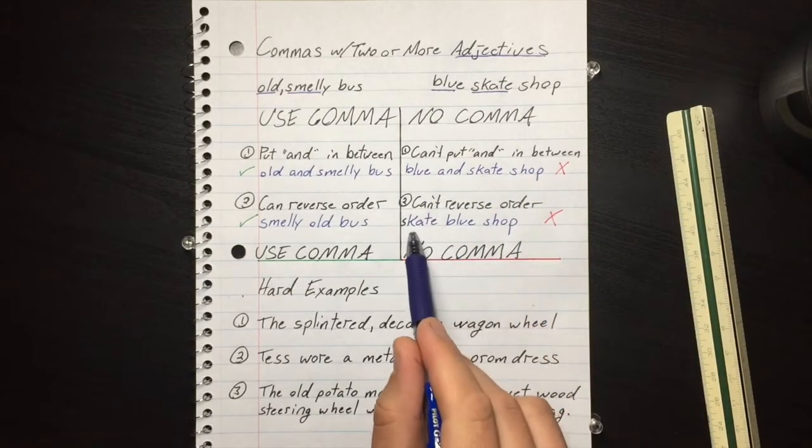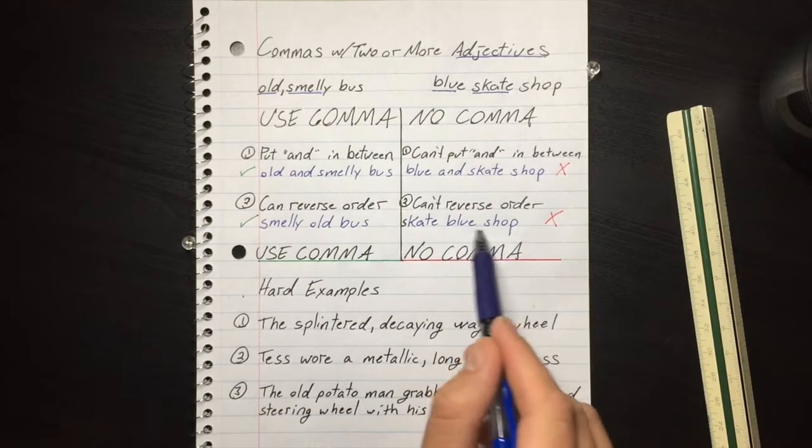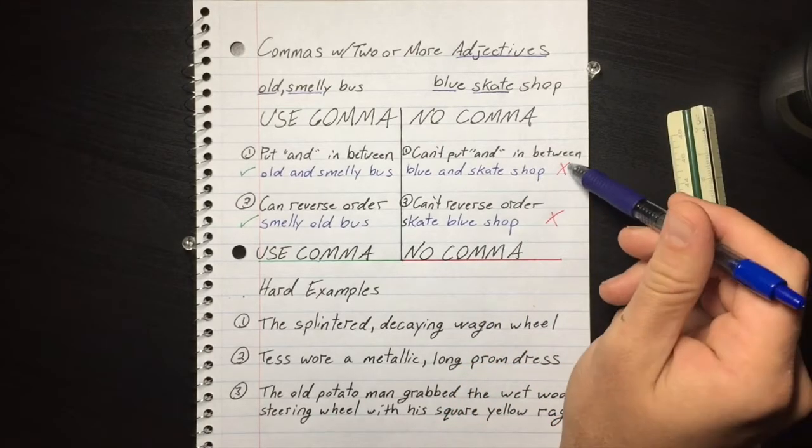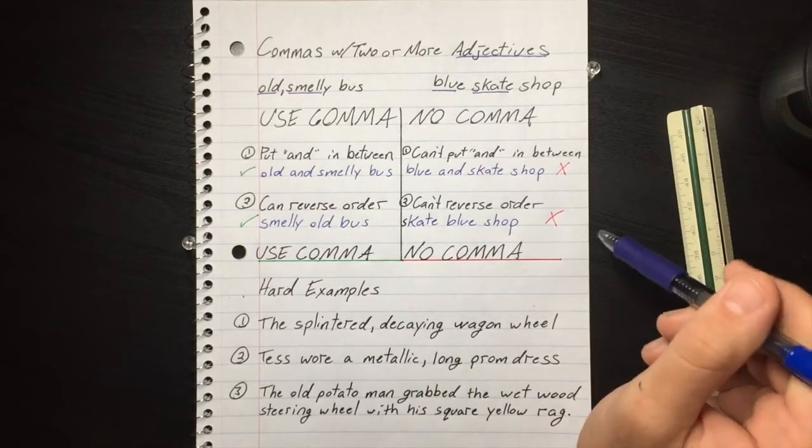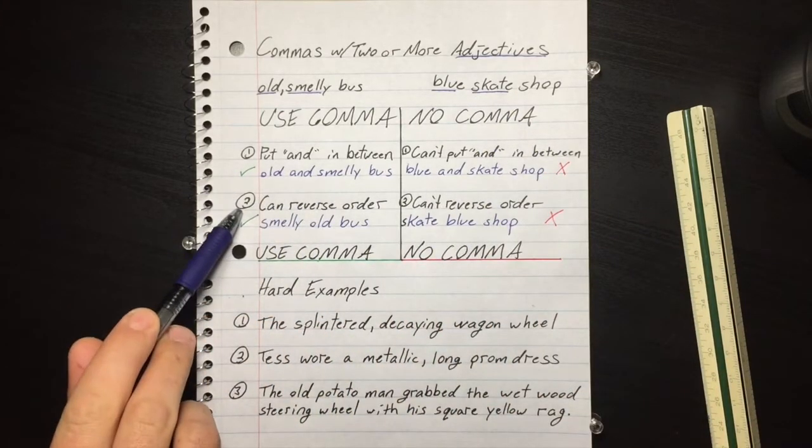If you can't reverse the order, skate blue shop - again, what is a blue shop and what's a skate blue? It just blows my mind. That doesn't work. If it doesn't pass these tests, no comma. If it passes these tests, comma.